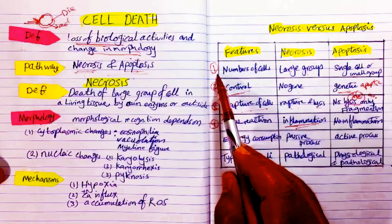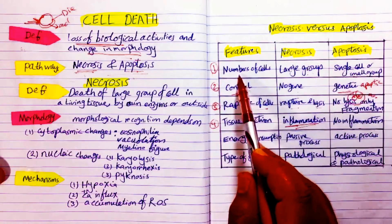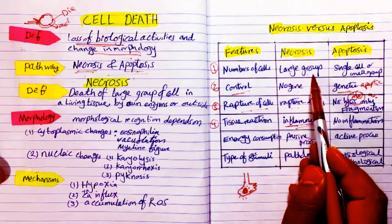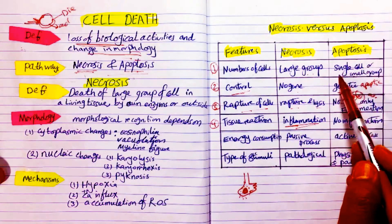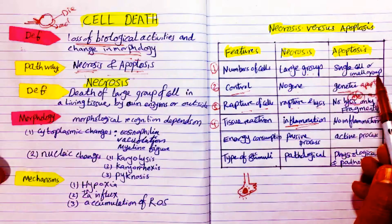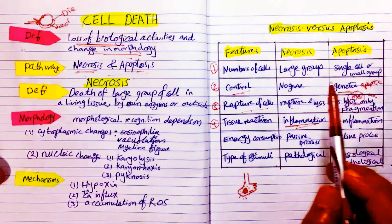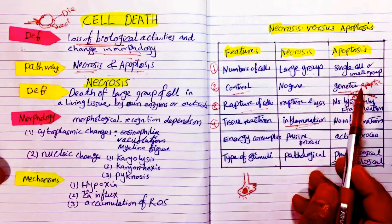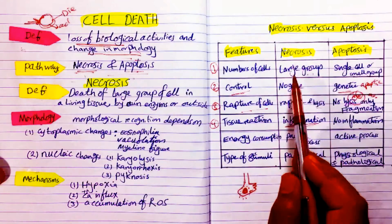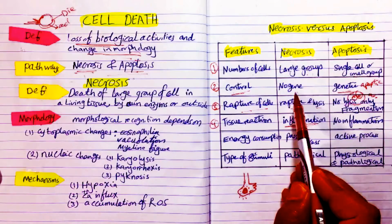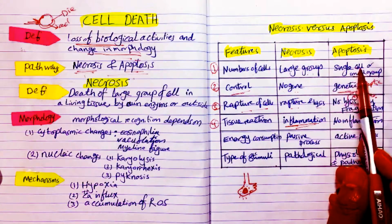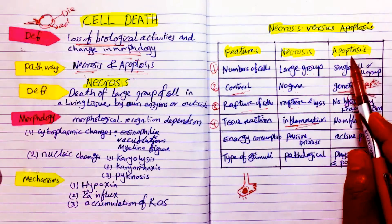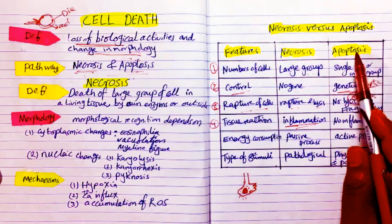Let us go through the points that differentiate between necrosis and apoptosis. First, the number of cells: in necrosis there is dying of a large group of cells, while in apoptosis it means death of a single cell or very small group of cells. Second, control of the process: in necrosis there is no gene control, while in apoptosis there is a genetic control mechanism — a specific gene within the cell whose activation results in apoptosis. So apoptosis is a programmed cell death.